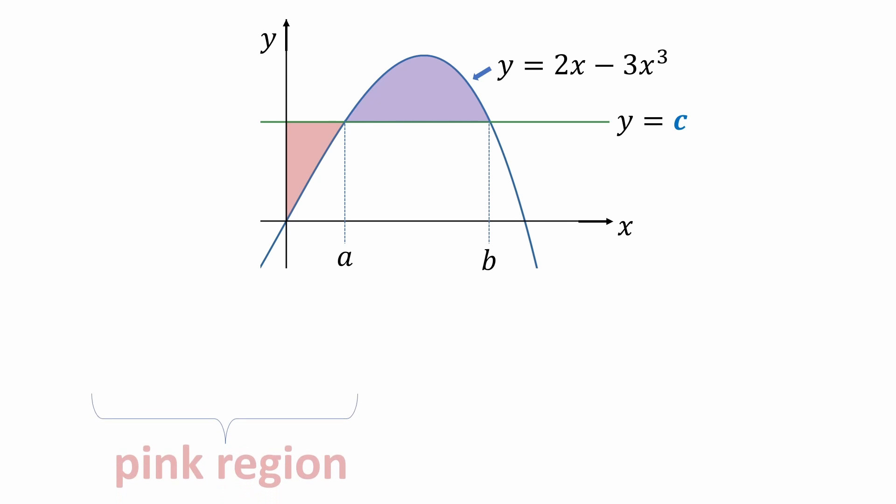The area of the pink region will equal the area of the rectangle highlighted in yellow which would be a times c minus the integral of the cubic function from 0 to a.